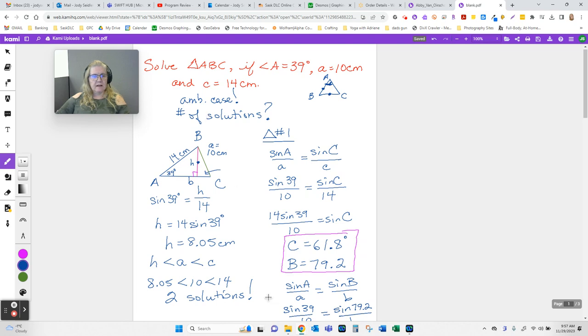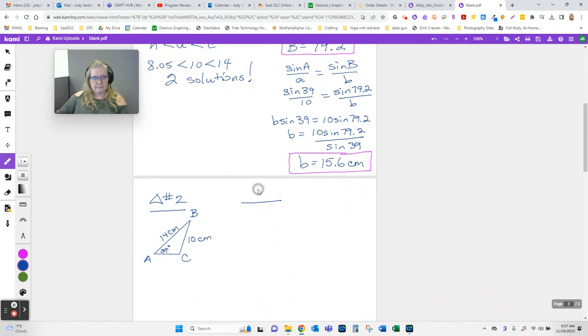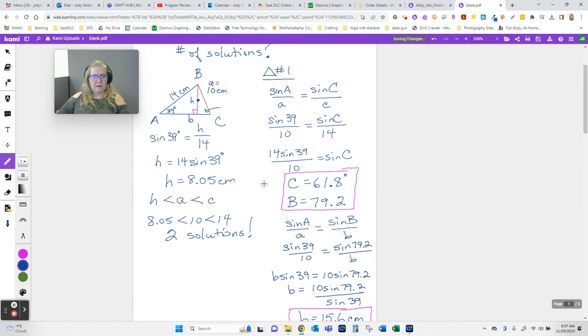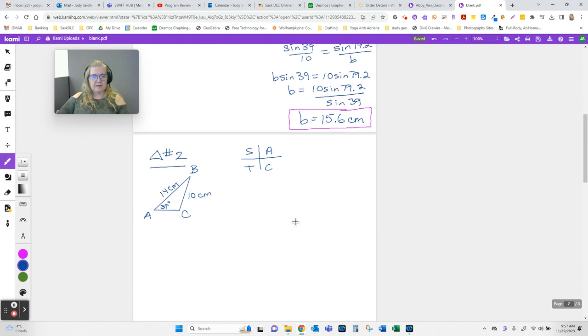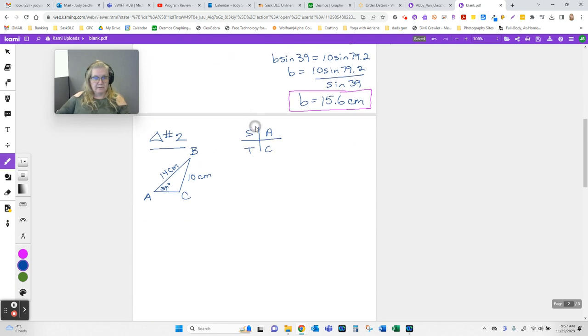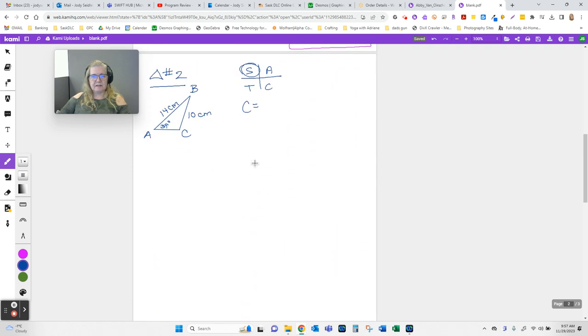Remember, the ambiguous case comes from the fact that if you think about quadrants, when we found angle C using the sine law, there were technically two answers, but we ignored that there is one in the second quadrant that would also work. We found C for case one to be 61.8. That means, in here, if it'll help our brains, C prime, 180 minus 61.8 is 118.2.